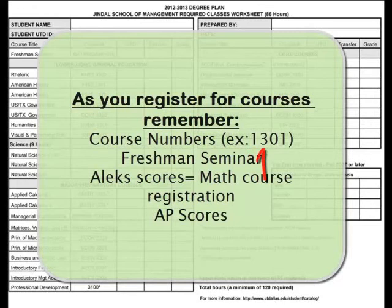The second number in the course series indicates the hours the course is worth. All freshmen are required to take the freshman seminar — do not forget to add that class. ALEKS scores are necessary for enrollment to any math course. Do not register into any courses you believe you may have AP credit for.